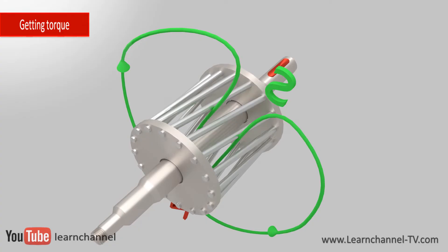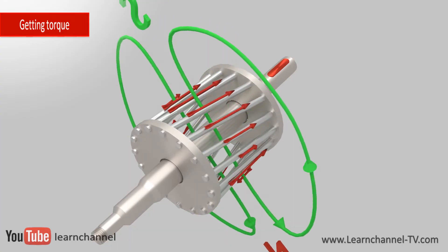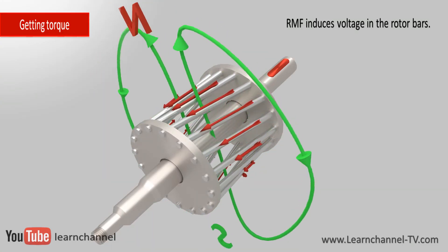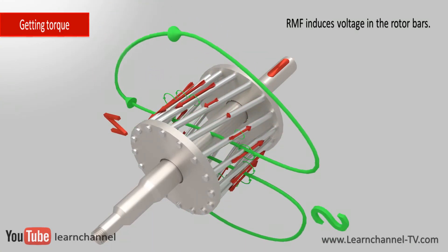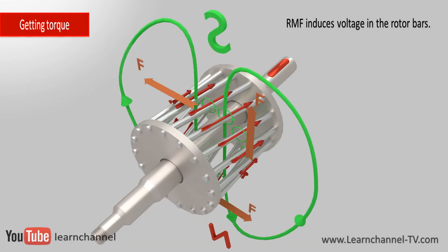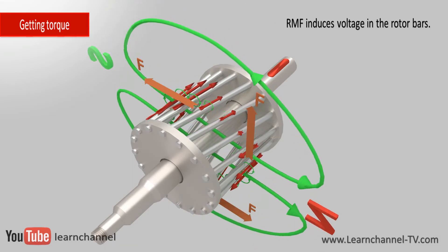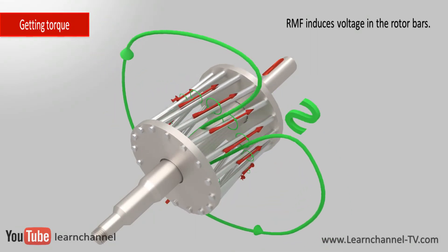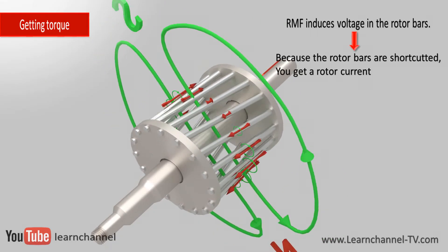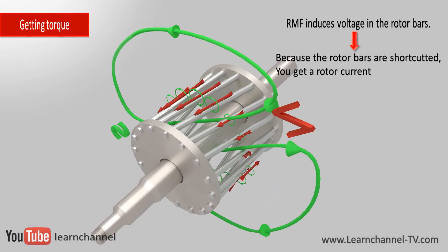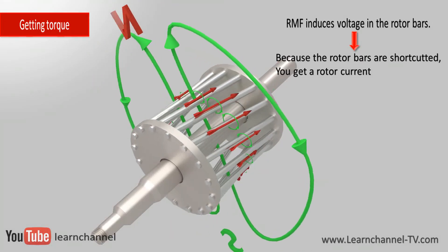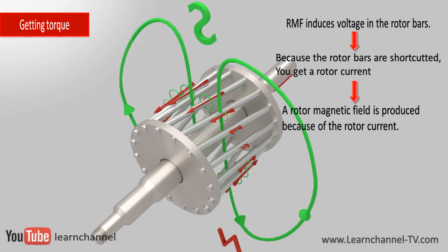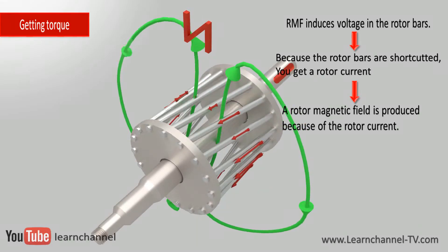As the stator magnetic field rotates, voltage is induced within the bars of the rotor. As the rotor bars are short-circuited at both ends, there is a closed path for the flow of current. This, in turn, produces its own magnetic field in the rotor bars, which opposes the magnetic field of the stator.